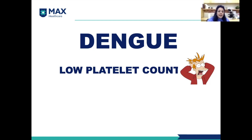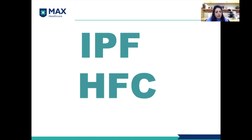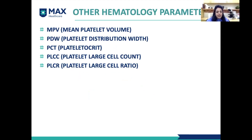In dengue, it is a low platelet count which is of major concern and which causes a lot of panic in the minds of the patient. We have been really working hard on predicting the platelet recovery. We have discussed a lot about the immature platelet fraction, formerly known as the IPF factor, and also about the HFC, which is the high fluorescent cells. Today's agenda is to give a small recap of the IPF and HFC, correlate the two parameters, and see how they help in the recovery of platelets. We also want to look at other hematology parameters — basically the platelet parameters — which might help in predicting the recovery of the platelets.